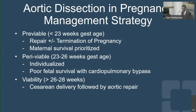It gets trickier in the periviable period, but fortunately this isn't frequent. The question becomes whether to deliver the baby or attempt aortic repair with the fetus in utero — the latter is associated with poor survival with cardiopulmonary bypass. For a pre-viable gestational age, the approach is usually repair with pregnancy termination, as the priority must be the mother.